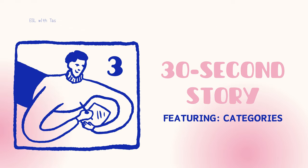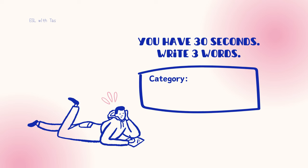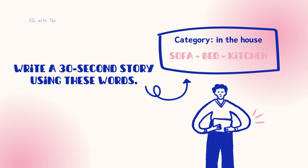The third activity is 30 Second Story — and yes, with categories. This activity consists of two stages. Stage one: all students have only 30 seconds to write down three words that fit within a specific category. For instance, if your lesson is about the house, each student writes three words related to it on a piece of paper. As soon as the 30 seconds are over, collect the cards and ask each student to randomly pick one card.